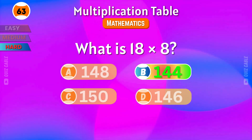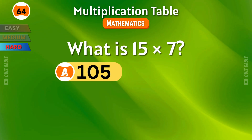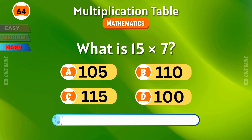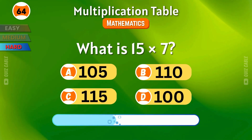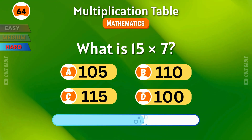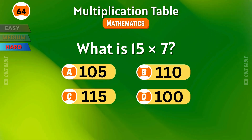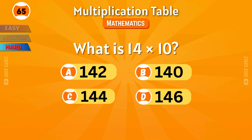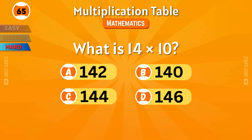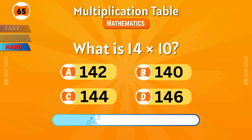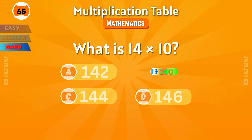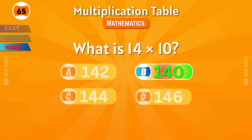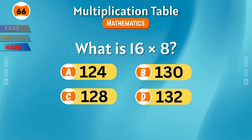What is 18 times 8? Correct — 144. What is 15 times 7? That's 105. What is 14 times 10? The total is 140.